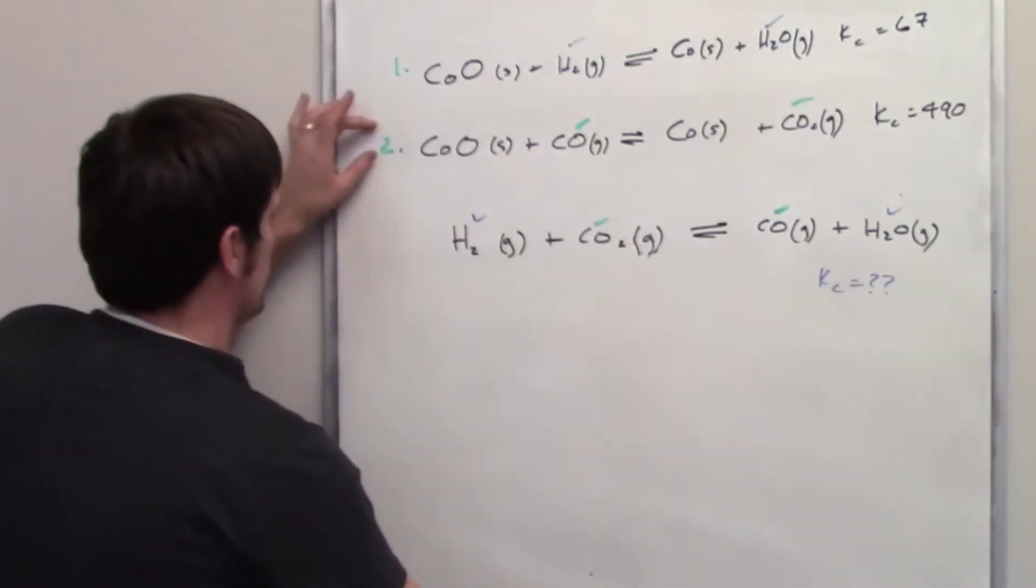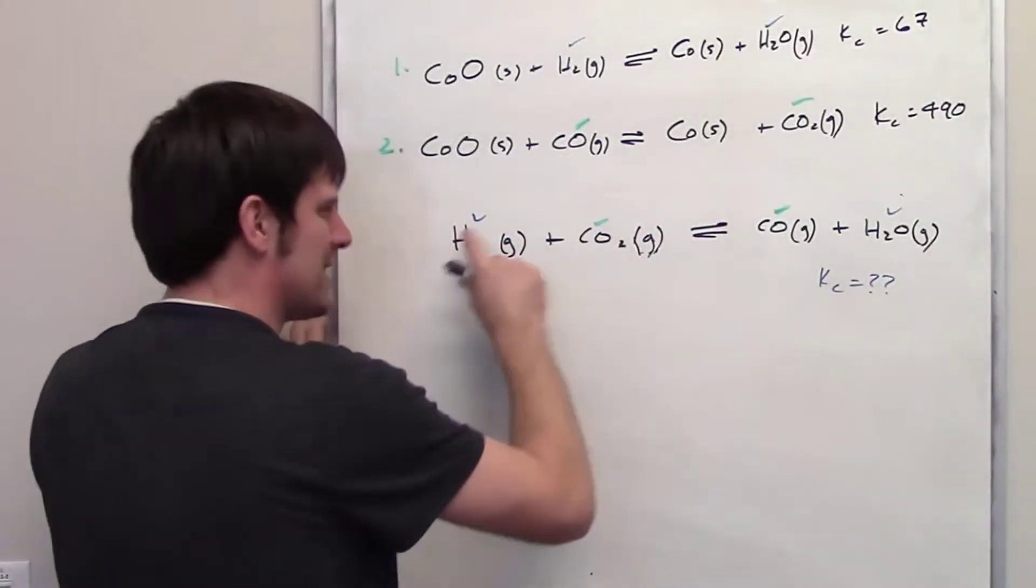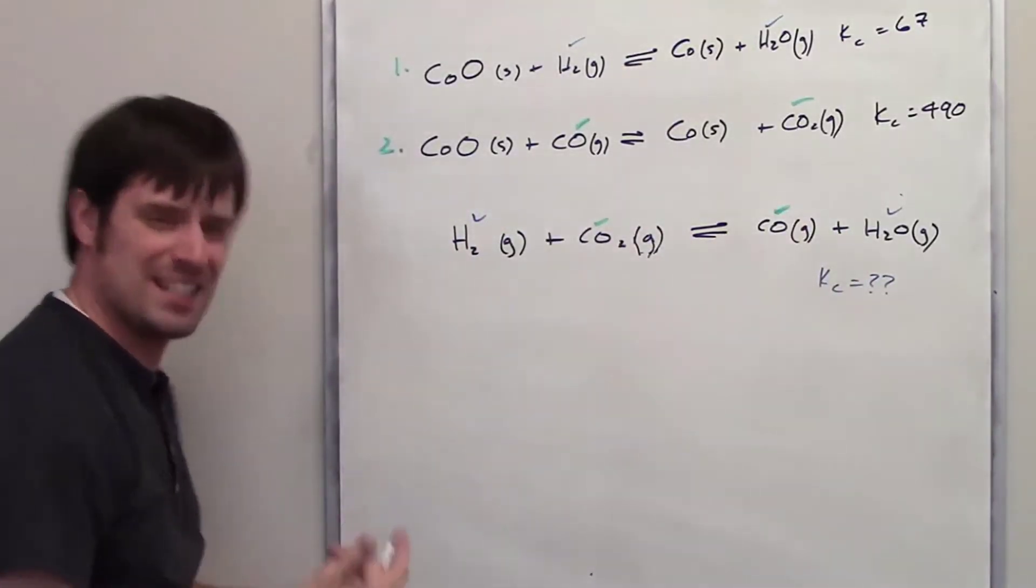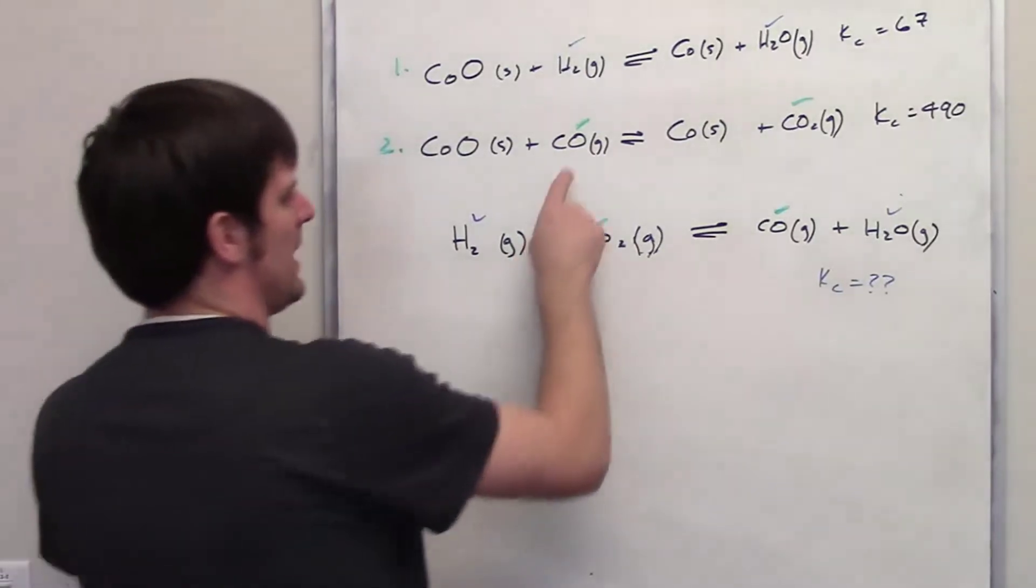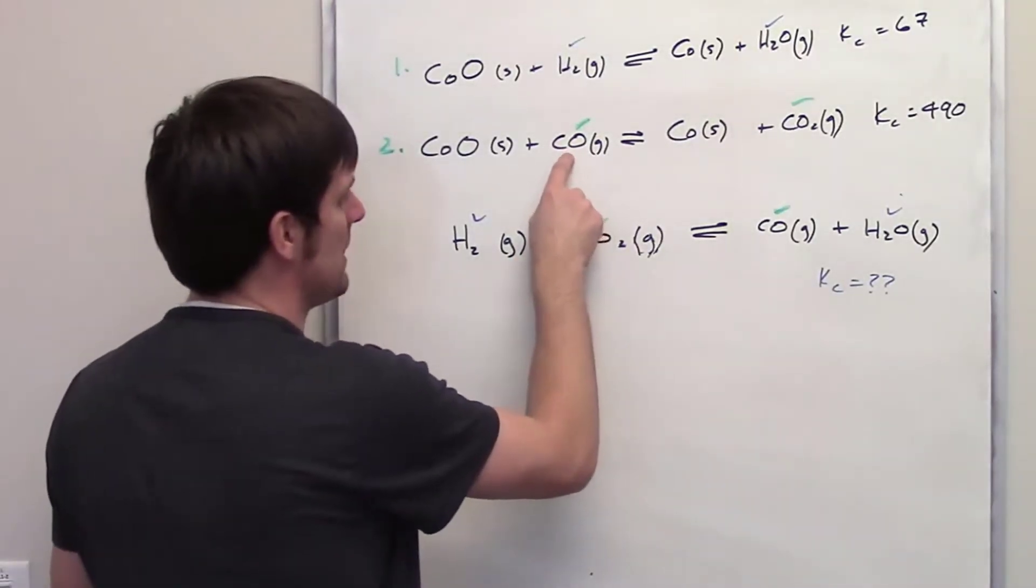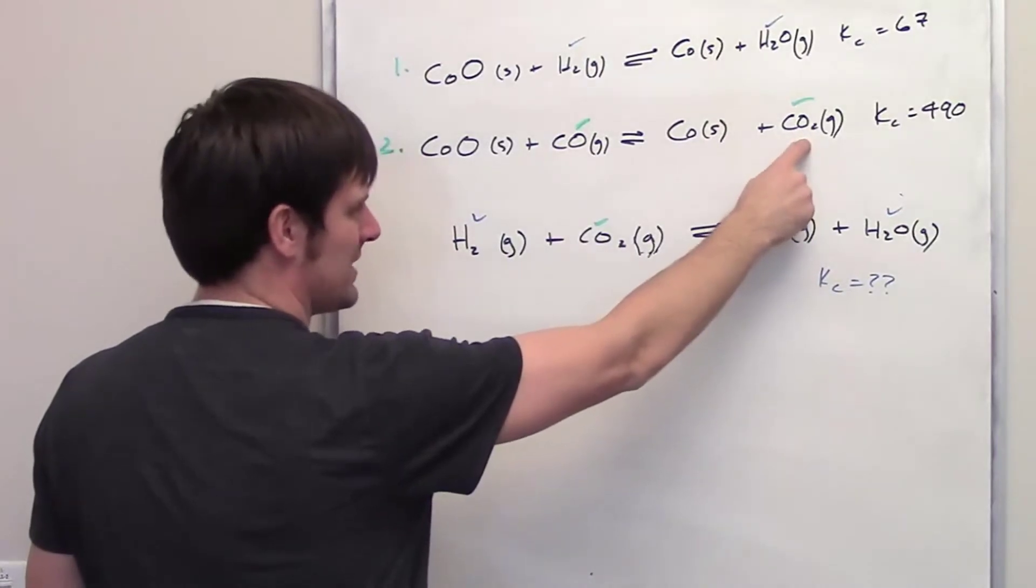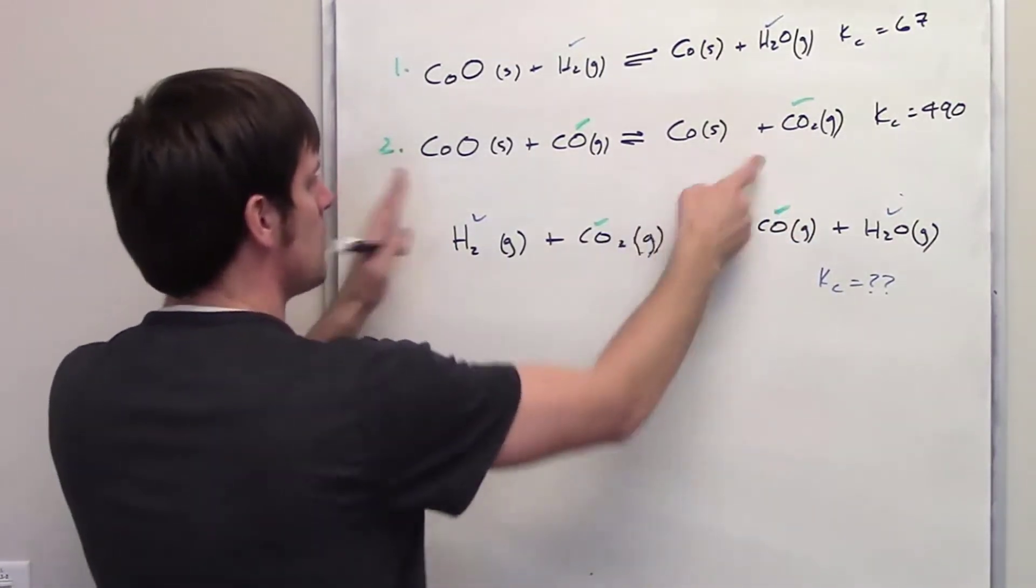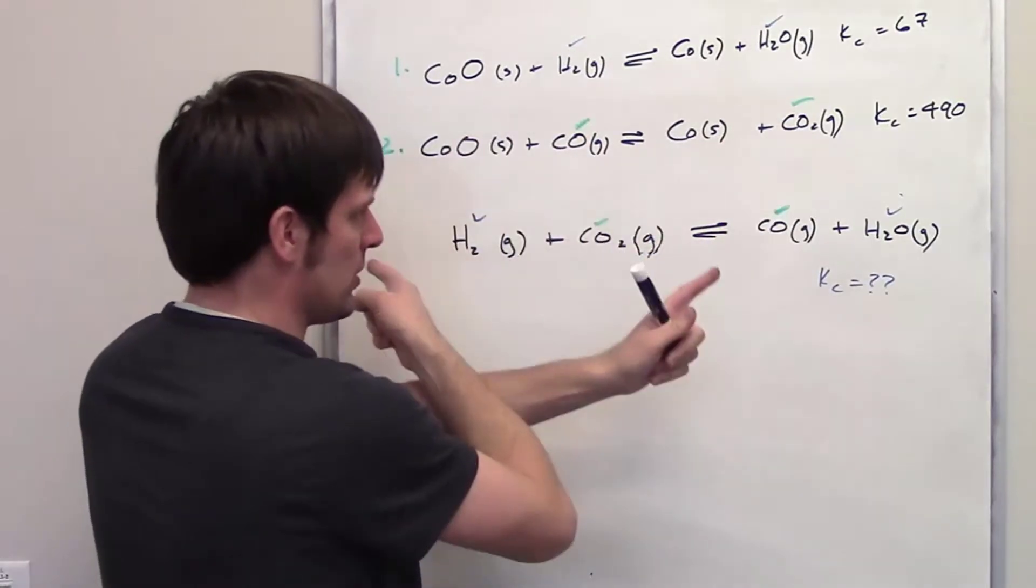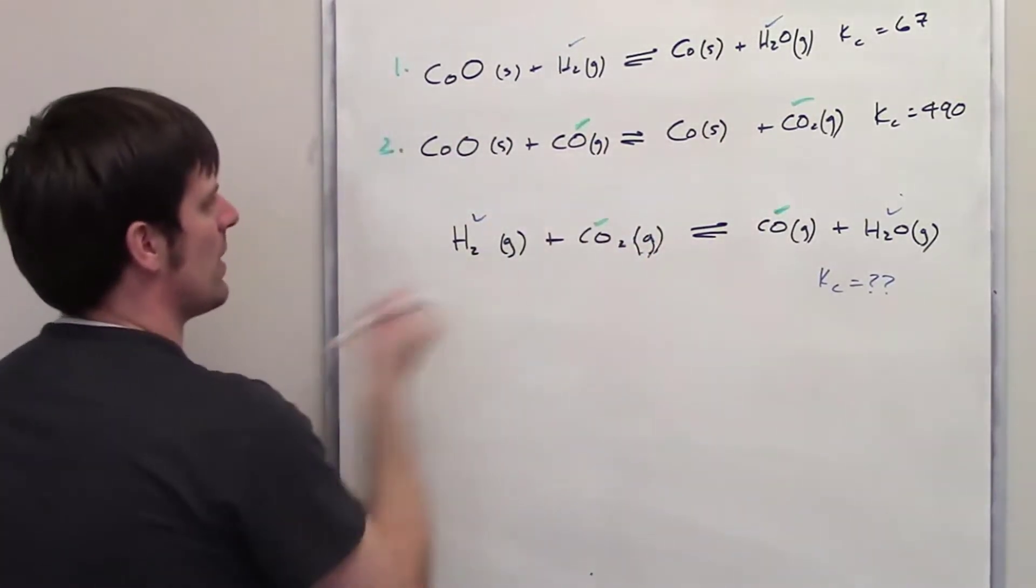Is there anything that I can do then with equation two to make it come closer to resembling this overall target equation we're trying to get to? Well, yeah, obviously I can see that carbon monoxide is on the left side of the equation here. It's on the right side of the equation down here. And this thing's on the right side of the equation. It's on the left side of the equation down here. So what we have to do is take this equation and reverse it. So I'll go ahead and do that right now.